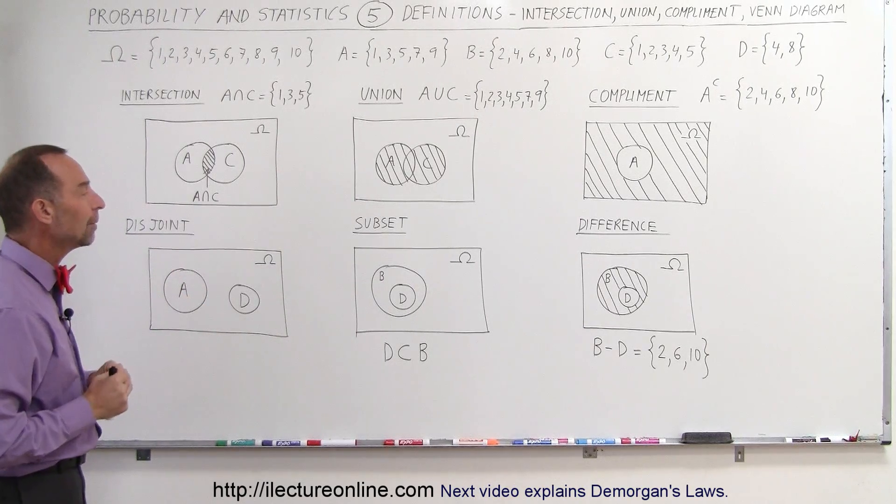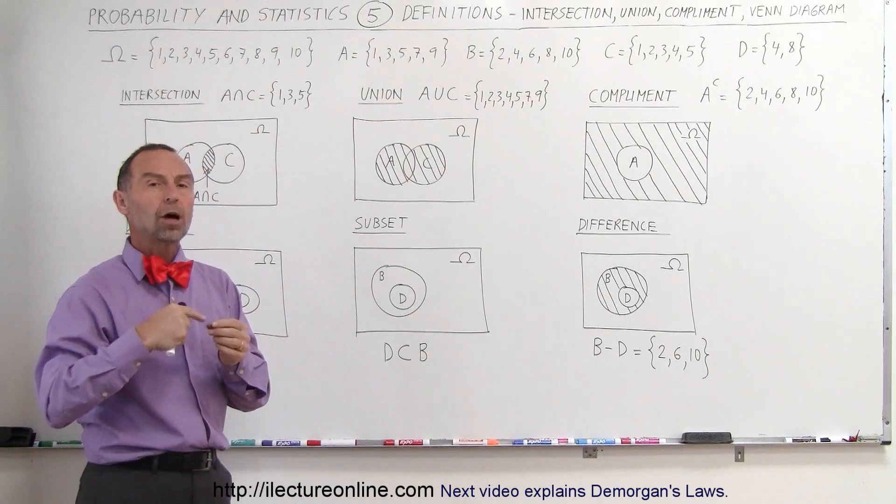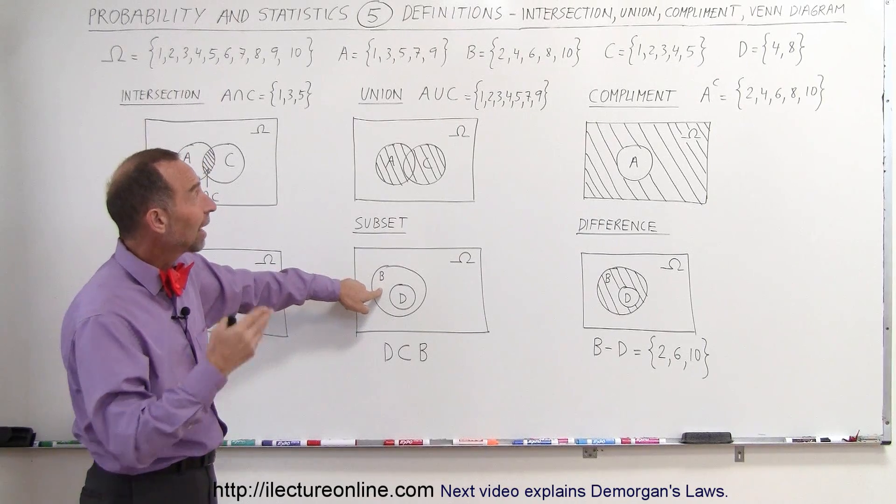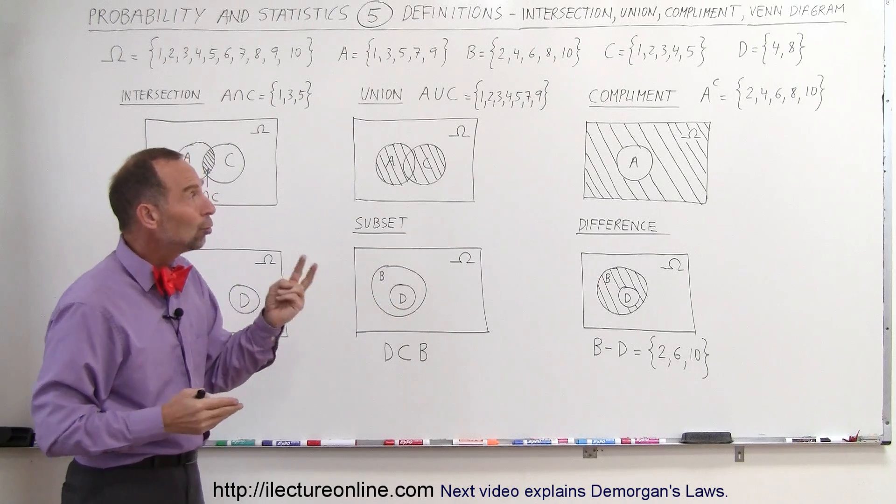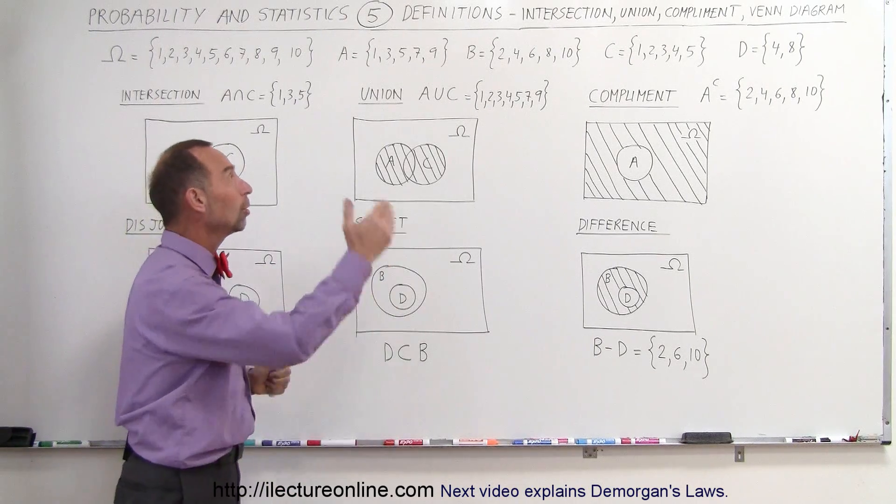In some cases, all the elements of one also belong to another one. For example, B as a subset has all the even numbers 2, 4, 6, 8, and 10. D has two even numbers, 4 and 8. So all of the numbers in D also belong to B, therefore D is a subset of B.